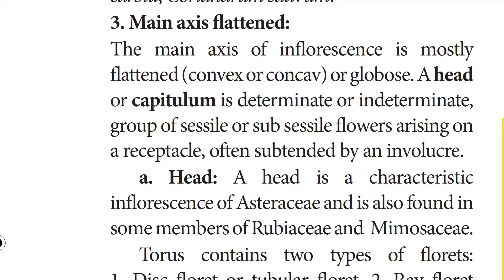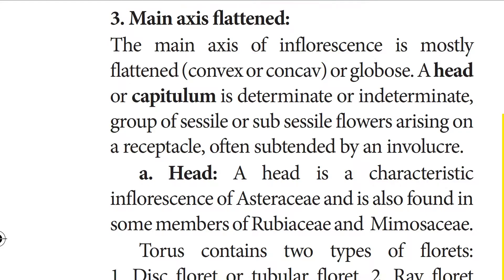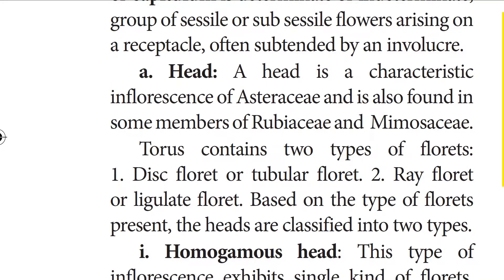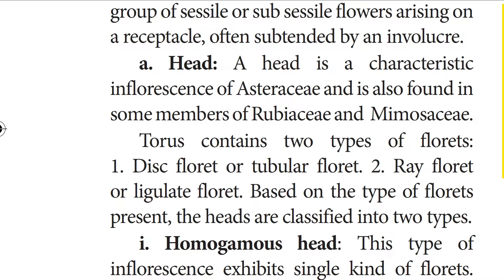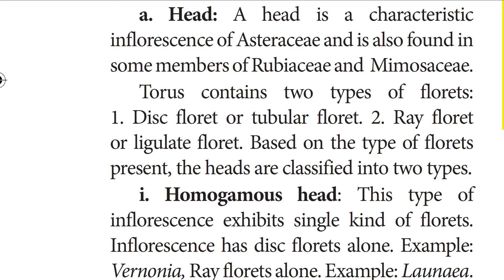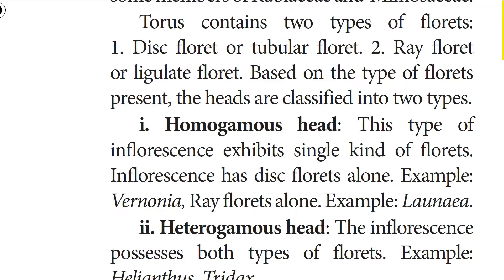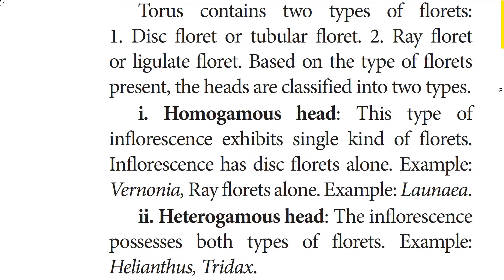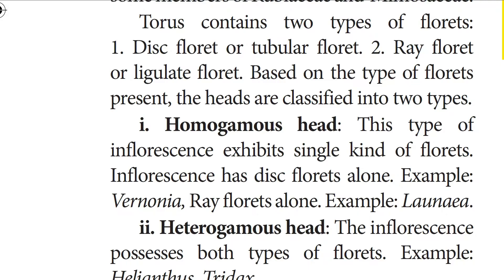Some members of Rubiaceae and Mimosaceae also possess head inflorescence. The torus has two types of florets: disc floret (tubular floret) and ray floret (ligulate floret). Based on the type of florets present, they are classified into homogamous head and heterogamous head. In homogamous head, only a single type of floret is present — either disc floret alone (example: Vernonia) or ray floret alone (example: Launaea).